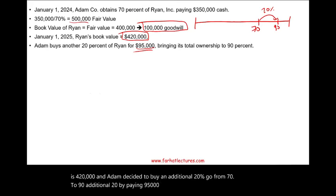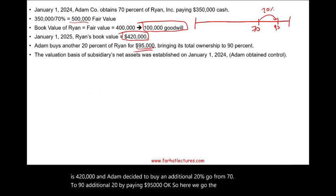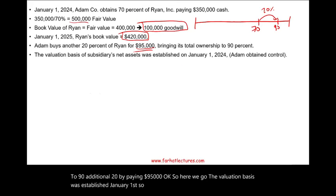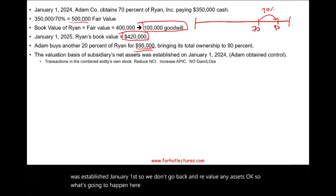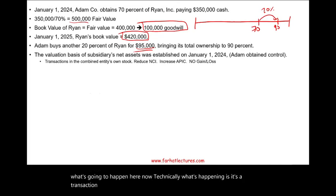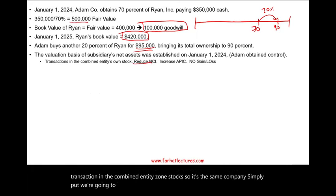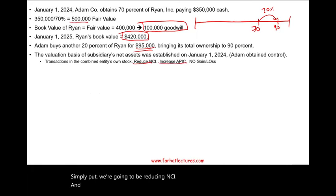Adam decided to buy an additional 20% — going from 70% to 90% — by paying $95,000. The valuation basis was established January 1st, so we don't go back and revalue any assets. What's happening technically is it's a transaction in the combined entity's own stock — it's the same company. Simply put, we're going to be reducing NCI and increasing additional paid-in capital. There is no gain and no loss.